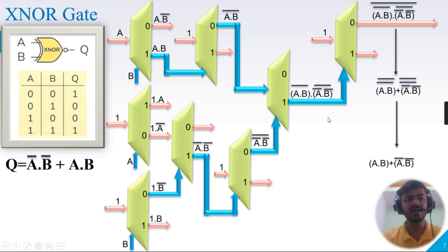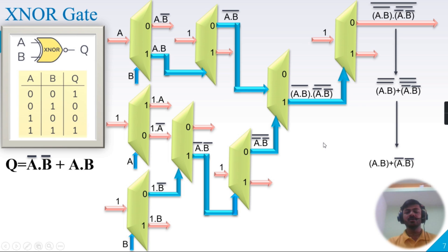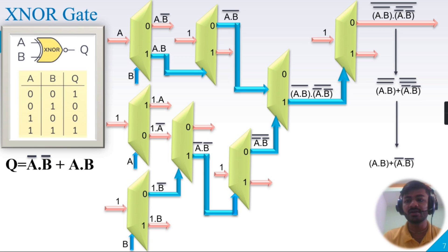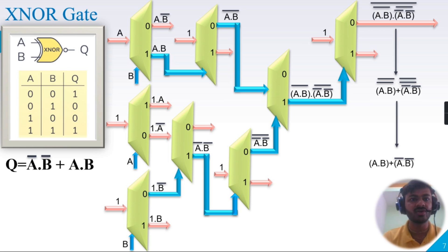This is how the XNOR gate is implemented using 1-to-2 demuxes. So we have now implemented all the logic gates — AND gate, OR gate, NAND gate, NOR gate, XOR gate, and XNOR gate — using 1-to-2 demultiplexers.